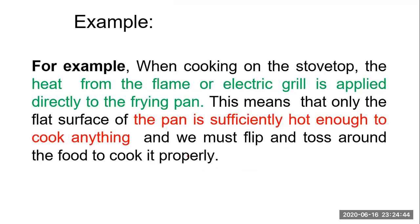For example, when you cook something in a pan on the stove, the flame or electric grill is applied directly to the frying pan, the pan heats up, and you can finish your cooking. That direct contact between the flame and the frying pan is called the conduction process.